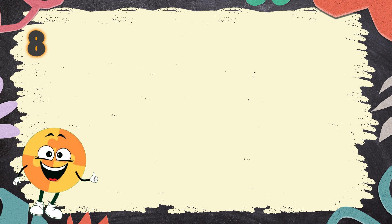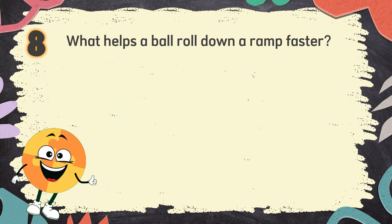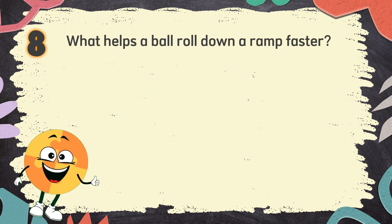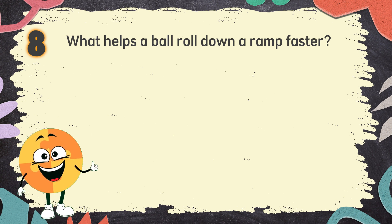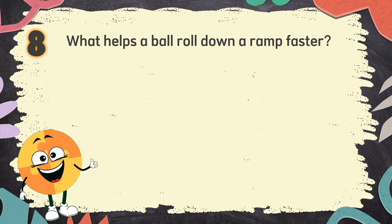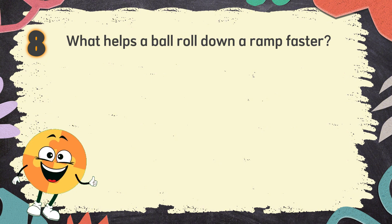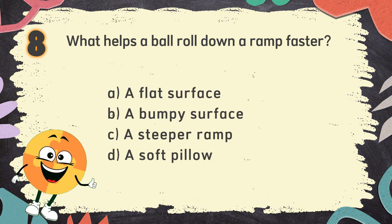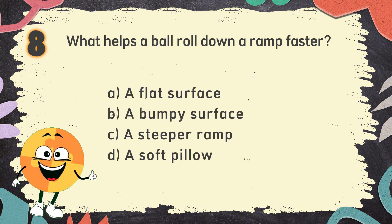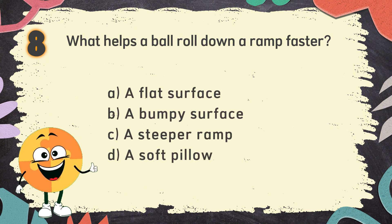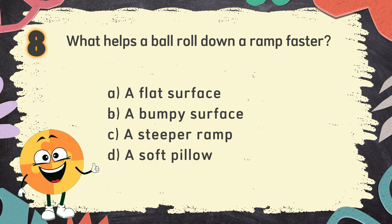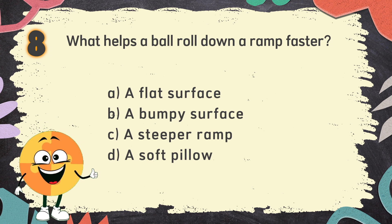Number 8. What helps a ball roll down a ramp faster? The choices are: A. A flat surface, B. A bumpy surface, C. A steeper ramp, D. A soft pillow.